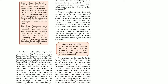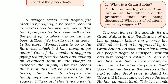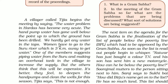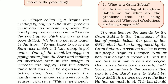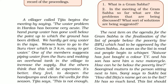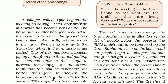A villager called Tijia says the water problem in Harda's village has become very acute. The hand pump water level has gone very low, well below the drilled point, so they hardly get any water. The women have to go to the Suru river, 3 km away, to get water. One member suggests piping water from Suru and making an overhead tank, but others think this will be very expensive and prefer to deepen the hand pumps and clean the wells.